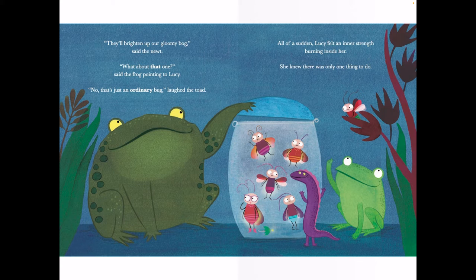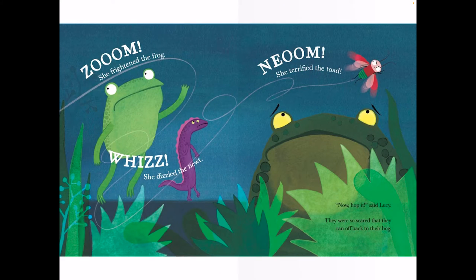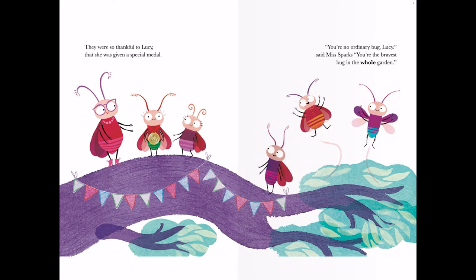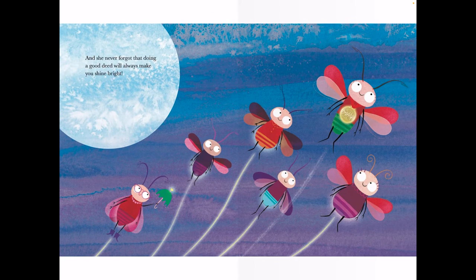All of a sudden, Lucy felt an inner strength burning inside her. She knew there was only one thing to do. Zoom! She frightened the frog. Whiz! She dizzied the newt. Noom! She terrified the toad. Now hop to it, said Lucy. They were so scared that they ran off back to their bog. Lucy used her super strength to set the lightning bugs free. And everyone cheered. They were so thankful to Lucy that she was given a special medal. You're no ordinary bug, Lucy, said Miss Sparks. You're the bravest bug in the whole garden. And she never forgot that doing a good deed will always make you shine bright.